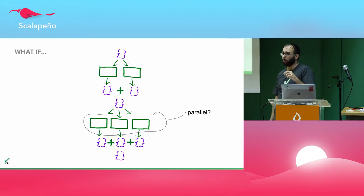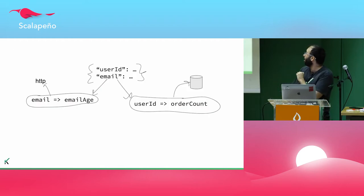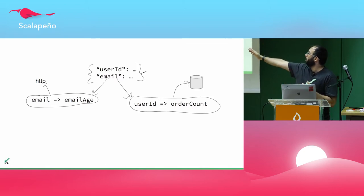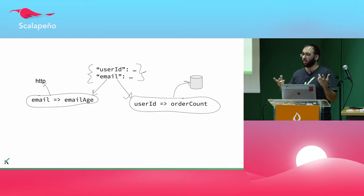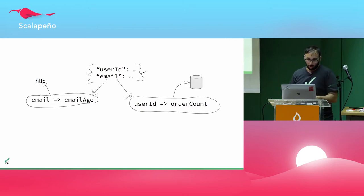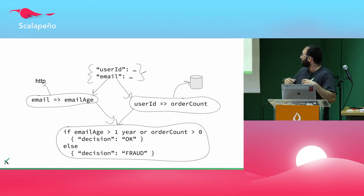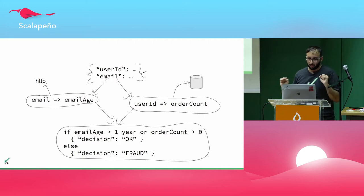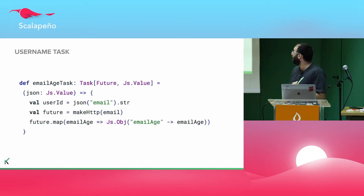Let's look at a concrete example: implementing a fraud detection algorithm. We get a JSON with a user ID and an email. We take the email and go to an external HTTP service which returns the email's age — like the first time it was seen on the web. For the user ID we go to the database and get an order count, indicating whether we know this user already. There's another task that depends on both of those: it checks if the email's age is greater than one year or the order count is greater than zero — then it's okay, else it's fraud. The code is very simple: we take an email out of the JSON, do an HTTP call to the service, and return a new JSON with the email's age.